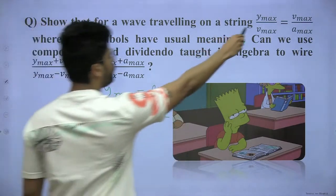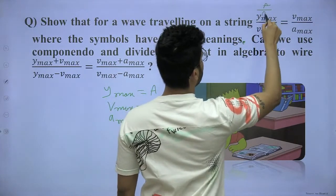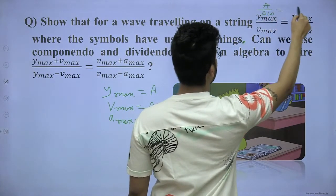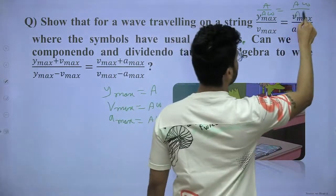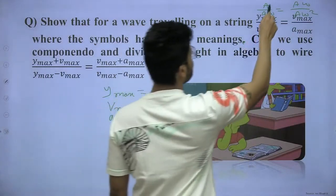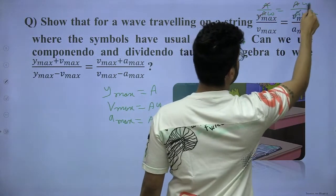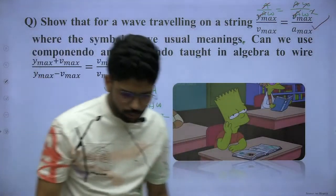I'm going to keep Ymax by Vmax. What is this? A by A omega equal to Vmax is A omega by Amax, which is A omega square. I think clearly to all of us, there is no doubt. That 1 by omega equal to 1 by omega. This is right. In the first part, the first part was very easy to prove the formula.